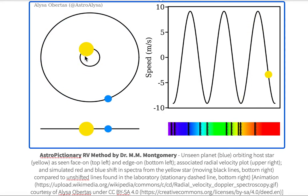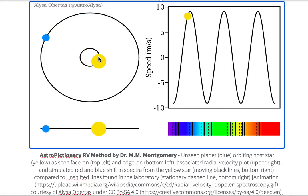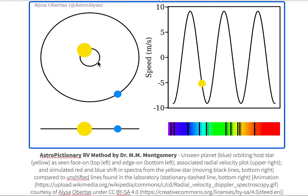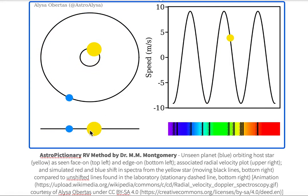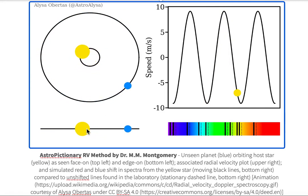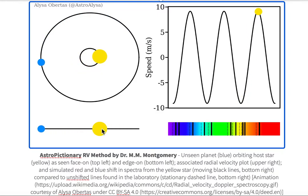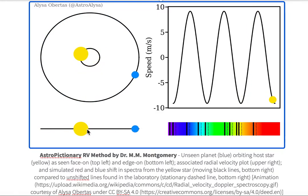Here we have an animation by Alyssa Obrides. We're looking at a host star, which is the color yellow, and it is orbiting in the sky. In the edge-on view we can see that the host star makes this wobble in the sky — it seems to wobble to the right, wobble to the left, and then back to the right.